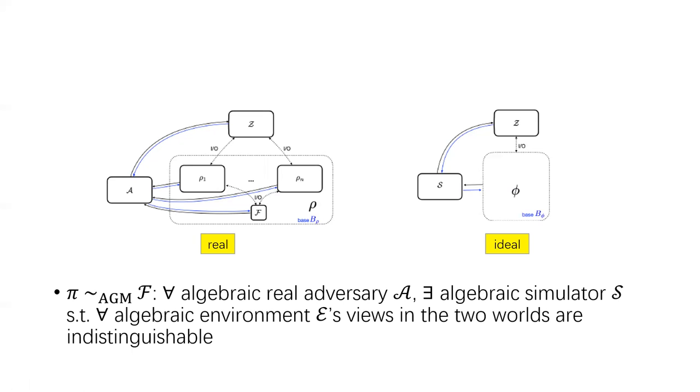Having defined the exact meanings of algebraic adversaries, we can now define UC-AGM emulation, which is the same as UC emulation except that all adversarial parties must be algebraic. Finally, we also prove that the composition theorem still holds in this setting. This shows that our UC-AGM framework is as useful as the original UC framework.